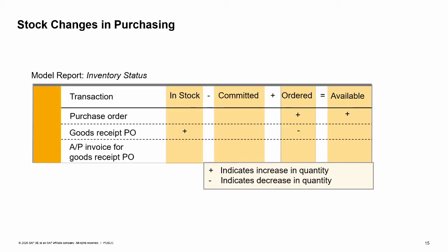You can use the report inventory status to analyze the inventory situation for one or more selected items. You can also see the inventory status in the item master on the inventory data tab page. The in stock column displays the current stock level of the item. The committed column displays the item stock that is reserved for customers and for internal use, including quantities for finished products based on bills of material for existing production orders. The ordered column displays the quantity ordered from external vendors plus the quantity being produced that will enter the warehouse by a certain date. The available quantity represents in stock minus committed plus ordered. A purchase order increases the quantity on order and therefore the quantity available to the customer. When a goods receipt PO is created referencing the purchase order, it increases the quantity in stock and reduces the quantity on order.